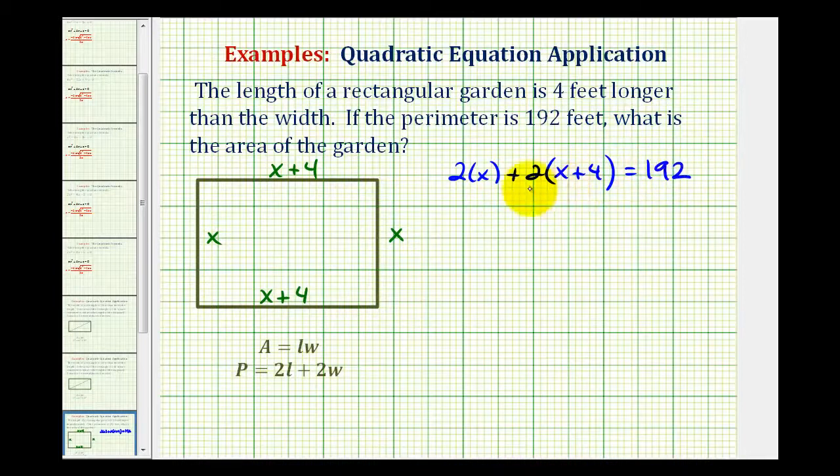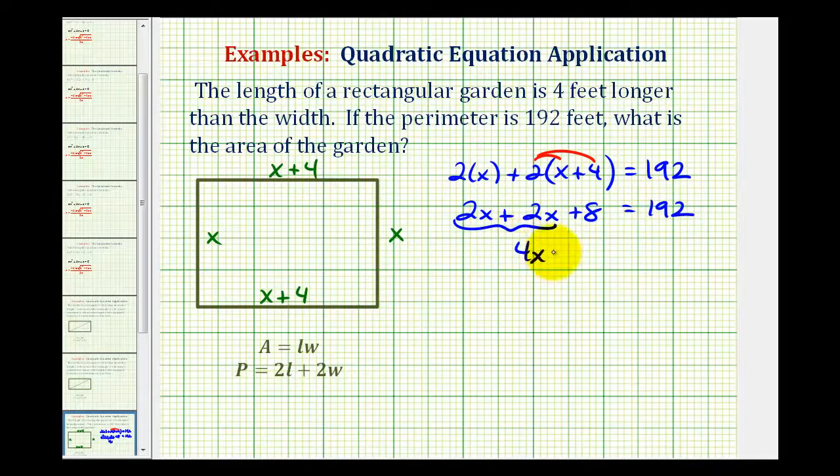So now we'll go ahead and simplify and solve for x. We have two x plus, this would be two x plus eight. Remember here we're distributing, equals 192. Then we have like terms here. So we have four x plus eight equals 192.